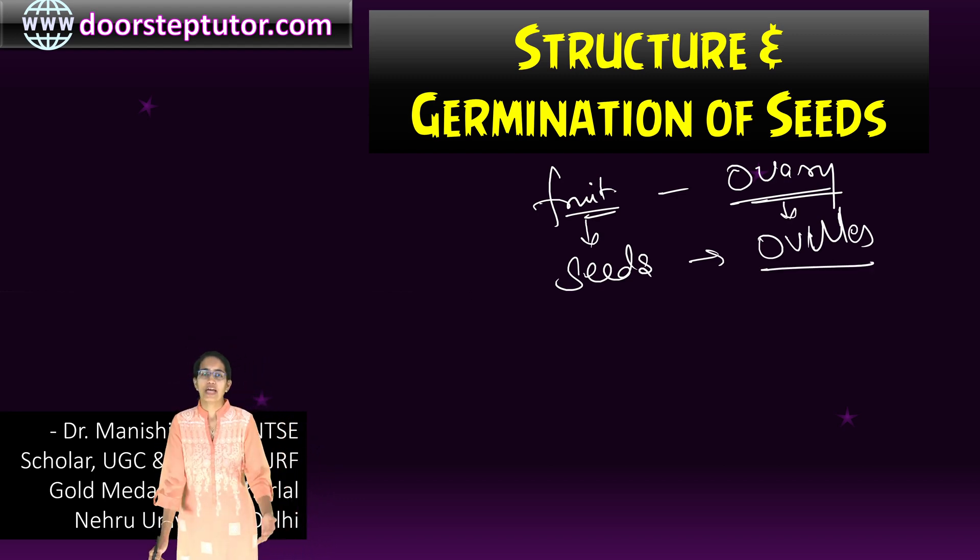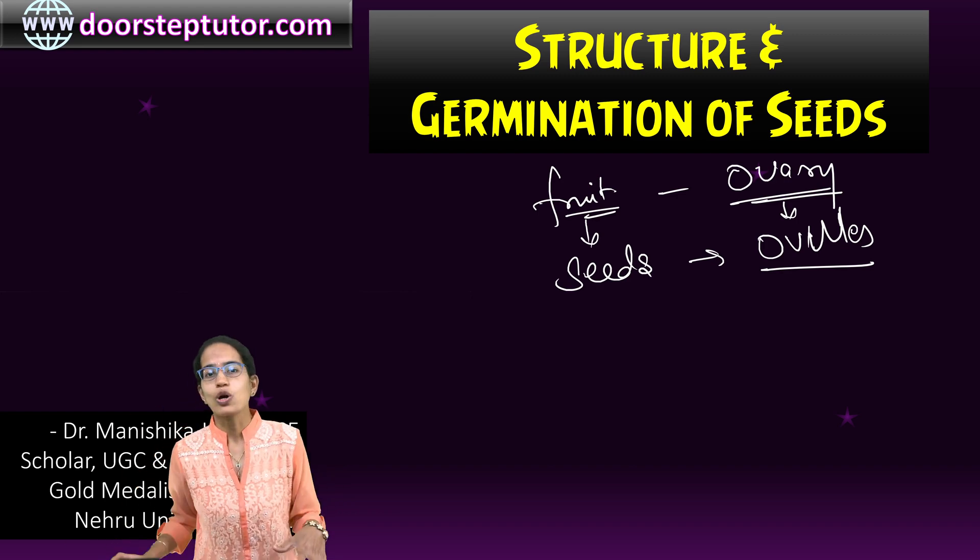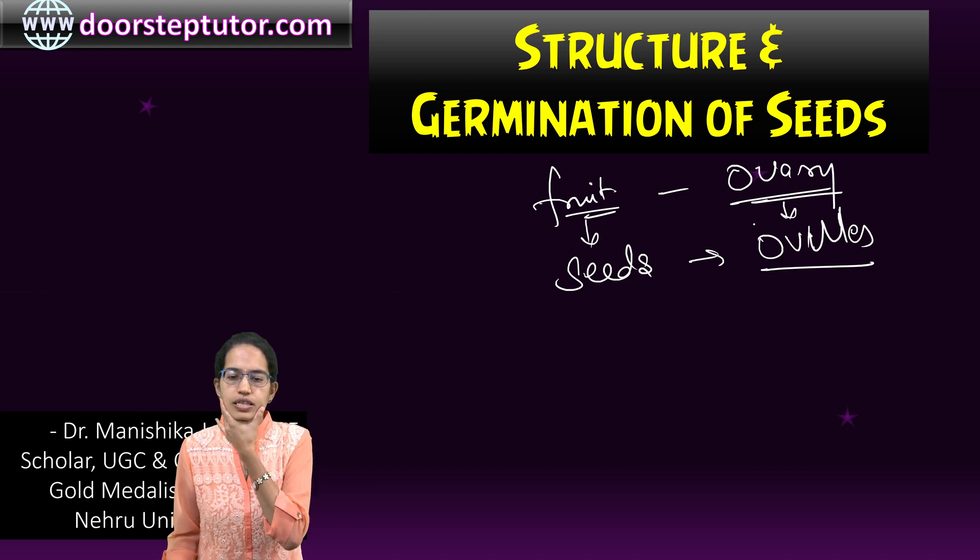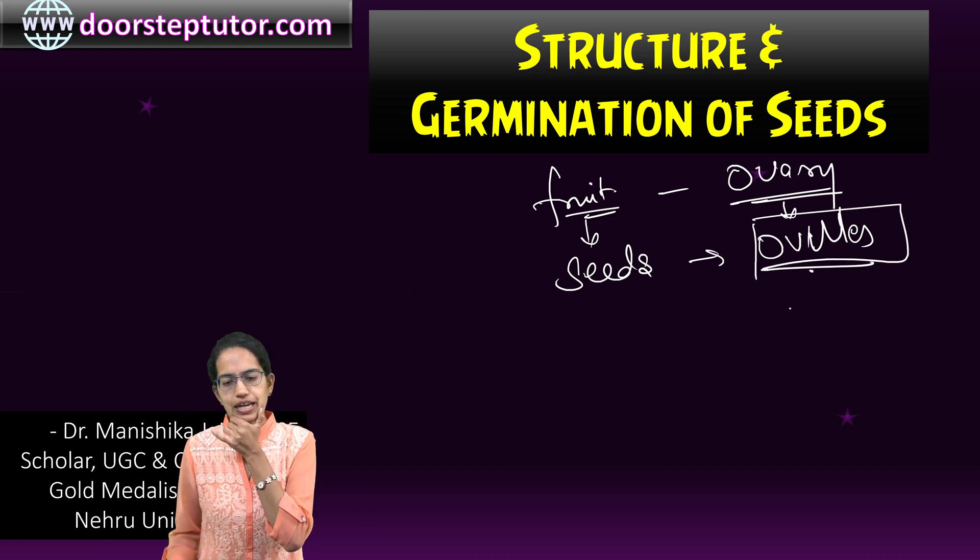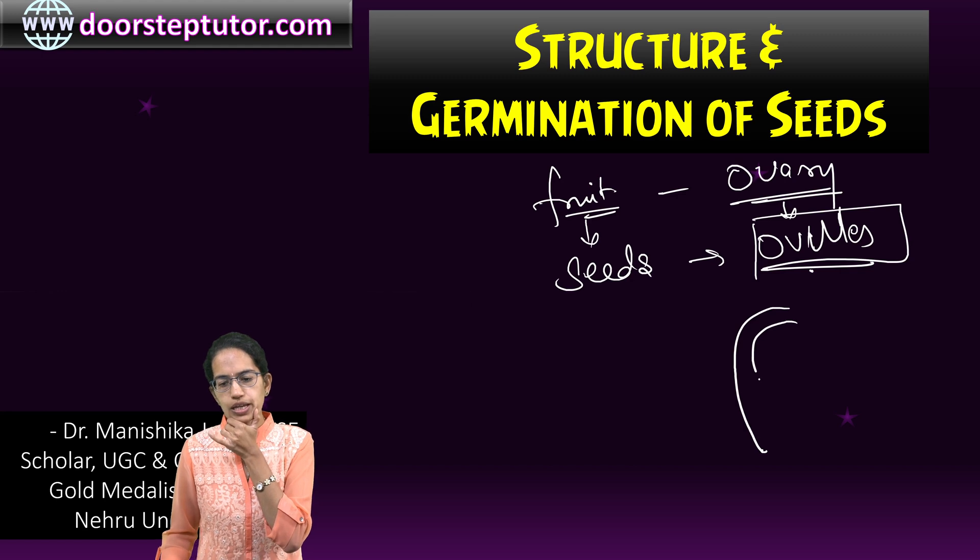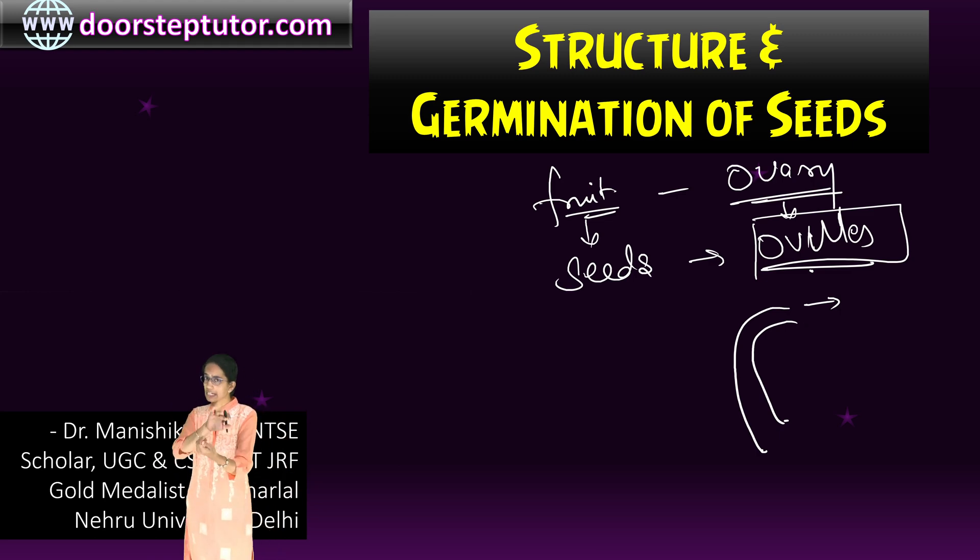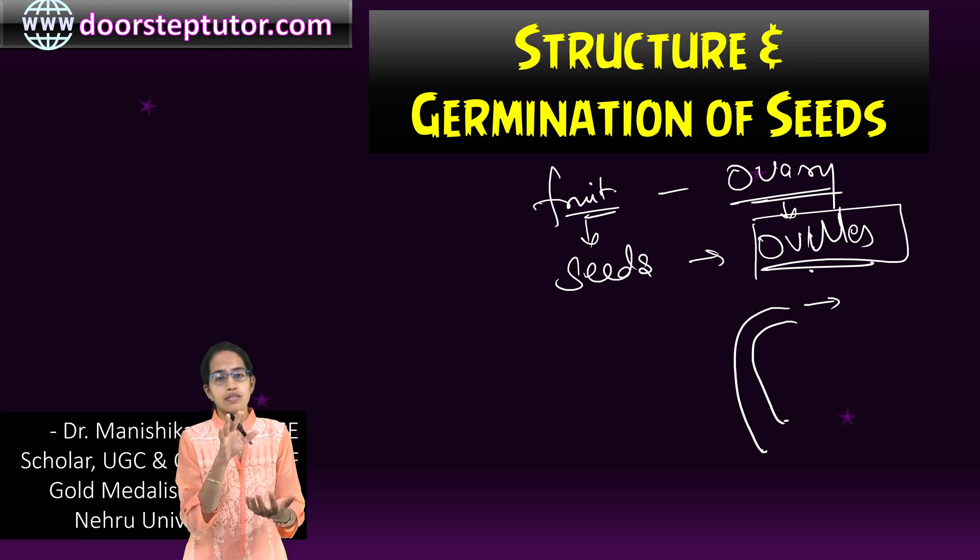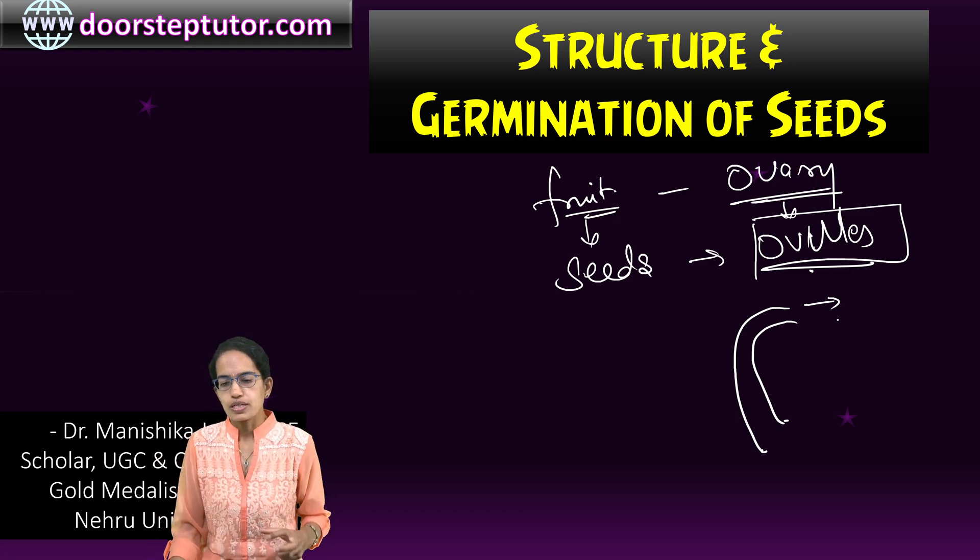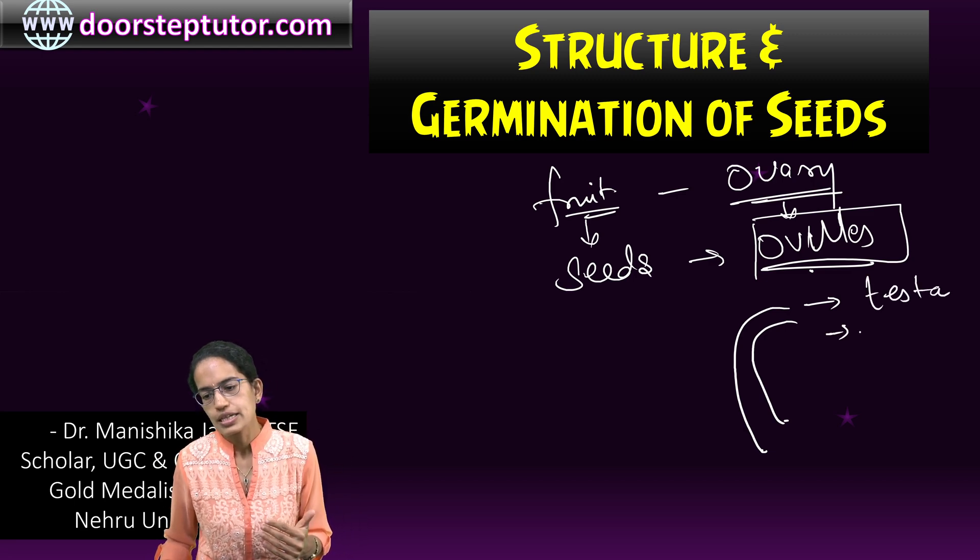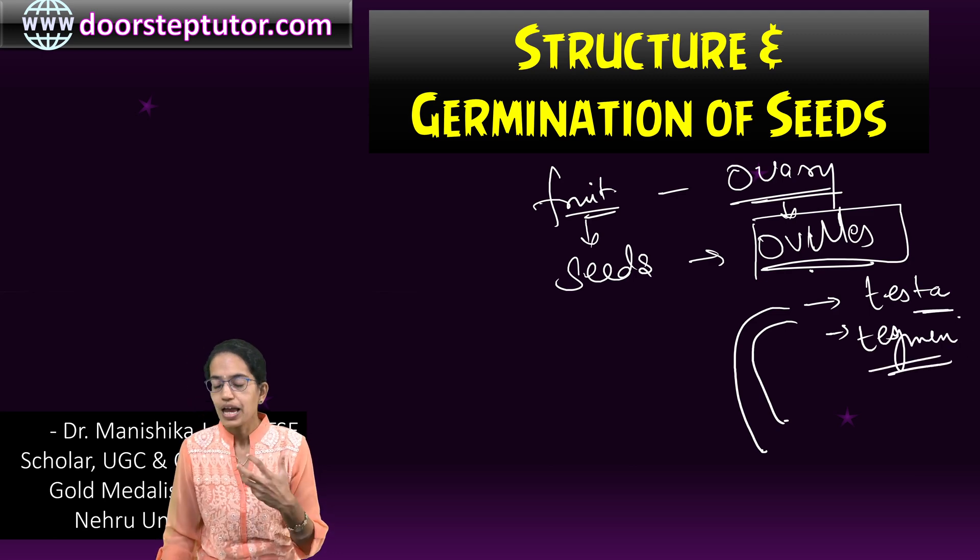Now this structure of ovule we have understood in our previous section where we have talked about the process of fertilization and pollination. This ovule has a very classic structure, the outer layer and the inner layer. The seed coat is the outermost covering which protects the endosperm. Endosperm is where the food is actually stored. The outer integument is known as testa. The inner integument is known as tegmen. So we have the two important layers testa and tegmen.